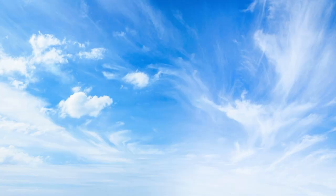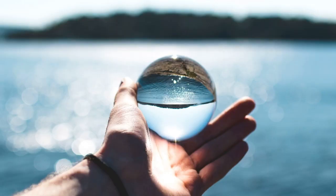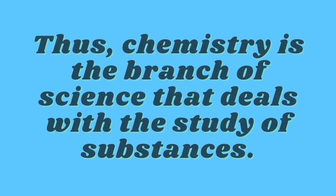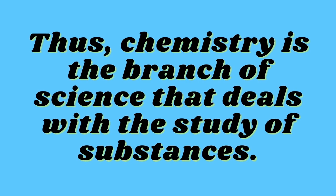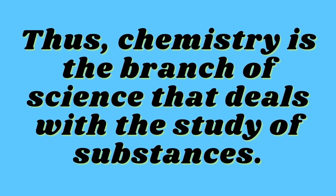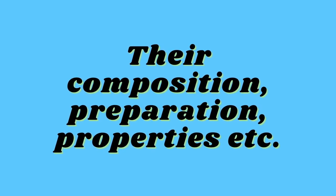All matter — living or non-living — is made up of five different elements: sky, air, earth, water, and fire. Since these elements are made up of atoms, everything around us is a study of chemistry. Thus, chemistry is a branch of science which deals with the study of substances, their composition, preparation, properties, and so on.